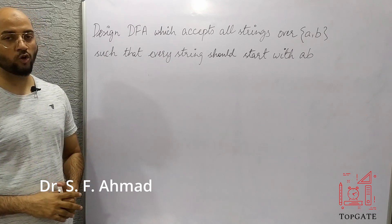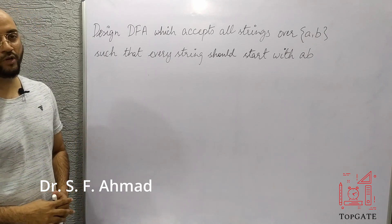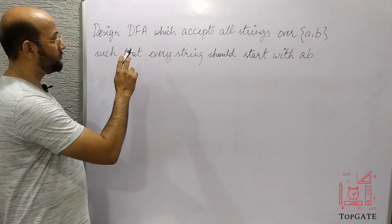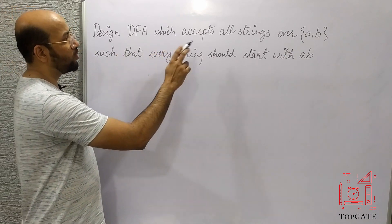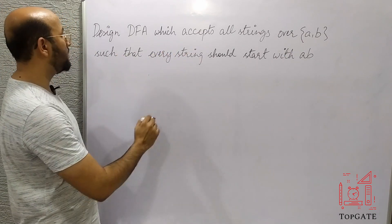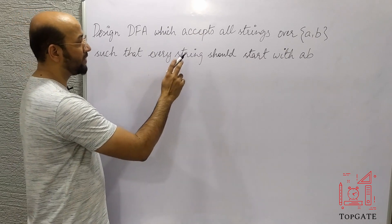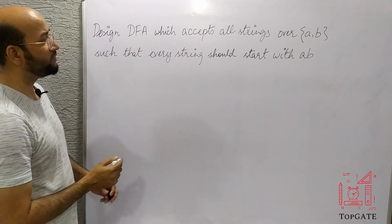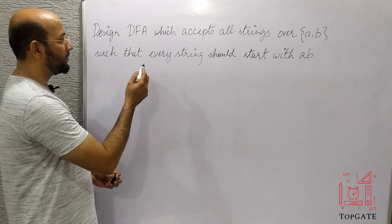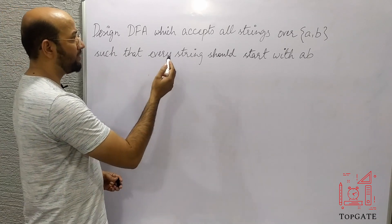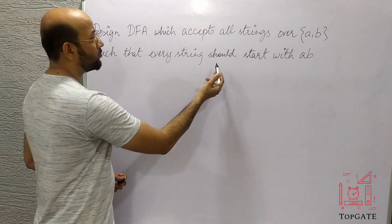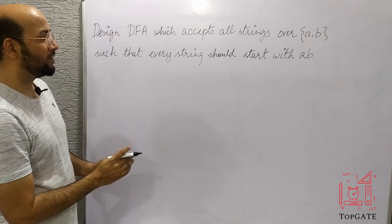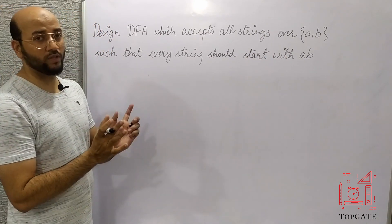Hello students, welcome to the channel Top Gate. In this video I will discuss one more problem of DFA — to design a DFA which accepts all strings over the alphabet {a, b} such that every string should start with 'ab'. In the previous video we discussed a DFA accepting all strings ending with 'ab'; now we have to consider strings that are starting with 'ab'.